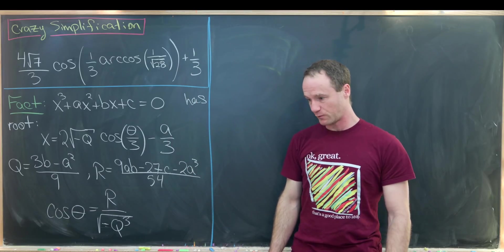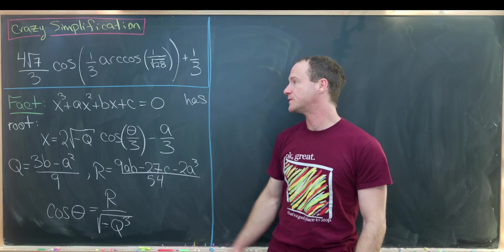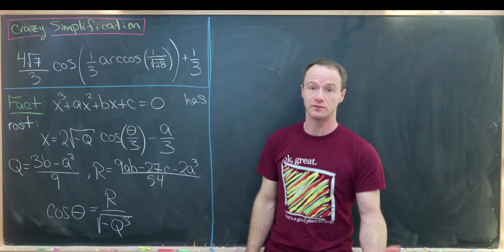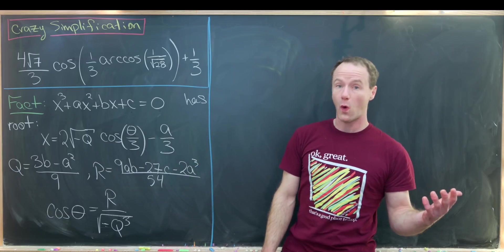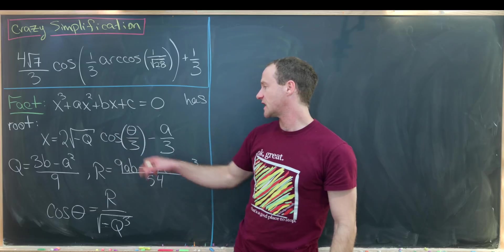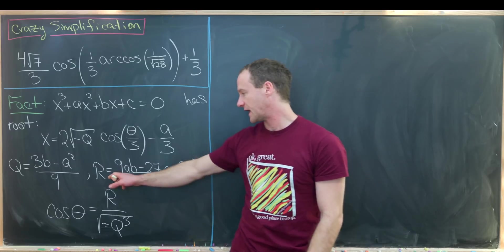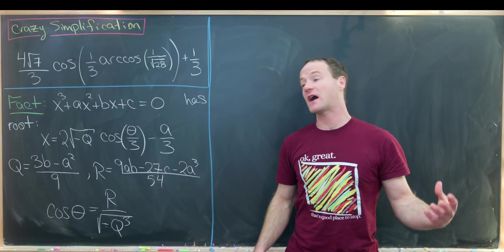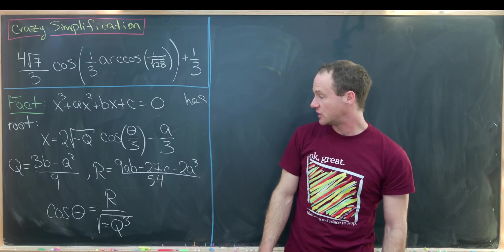Our first step will be based upon a trigonometric formula for the roots of a cubic polynomial. If we've got a cubic polynomial x cubed plus ax squared plus bx plus c and we want to find its roots, then one of the roots is equal to two times the square root of negative q times cosine of theta over three, minus a over three. Here q is three b minus a squared over nine, r is nine ab minus 27c minus two a cubed over 54, and cosine theta equals r over the square root of negative q cubed.